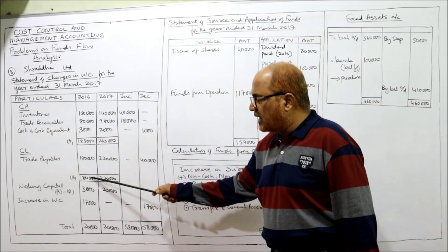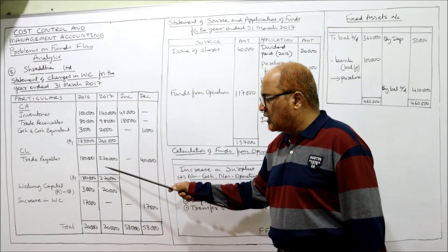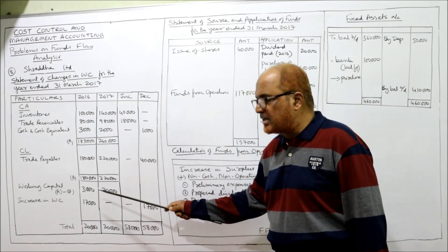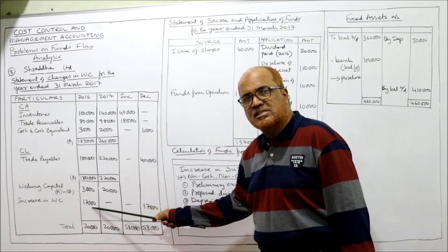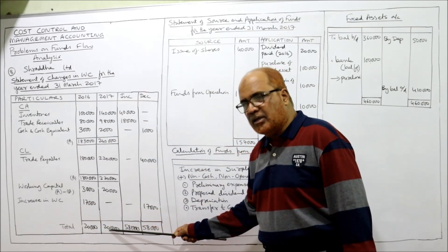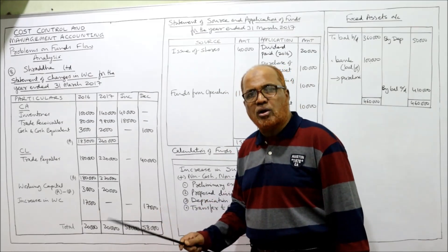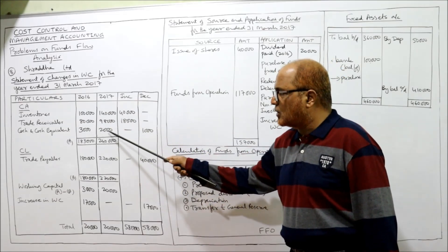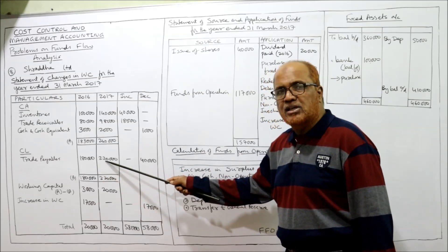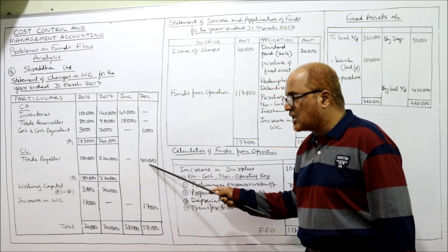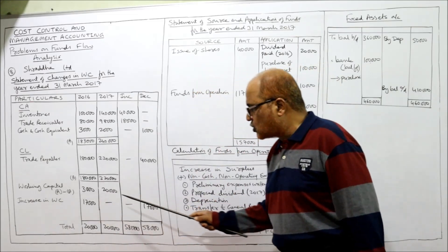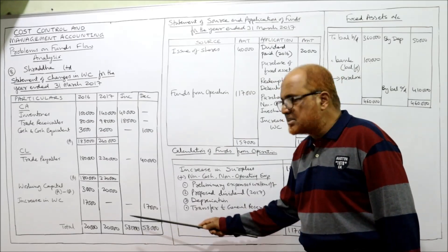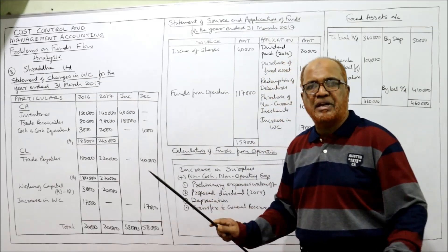Working capital A minus B: last year one lakh eighty-three thousand minus one lakh sixty-three thousand; current year two lakh forty thousand minus two lakh twenty thousand. Last year working capital three thousand, current year twenty thousand — increase in working capital seventeen thousand. To confirm: increase or decrease columns — forty thousand increase, eighteen thousand increase, one thousand decrease, and forty thousand increase in current liability goes in decrease column. Total fifty-eight thousand in both columns confirms seventeen thousand is correct.